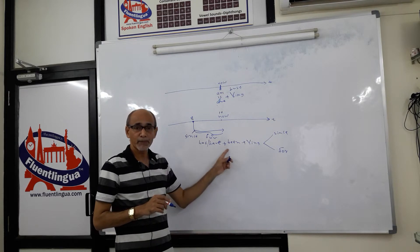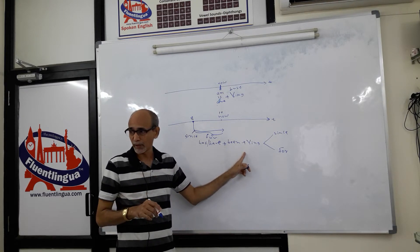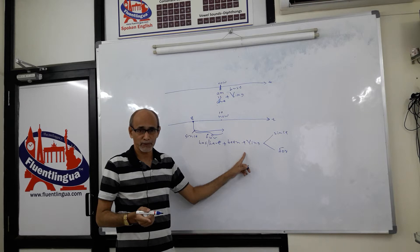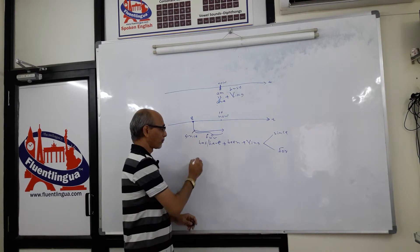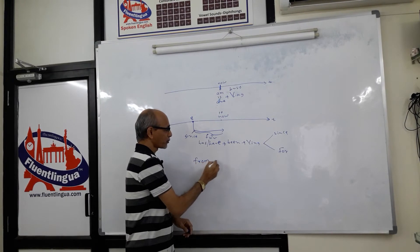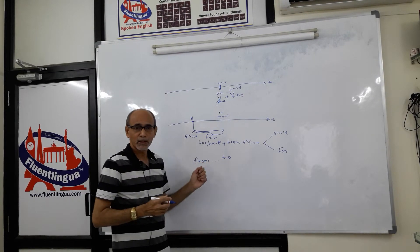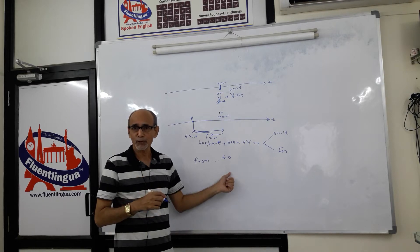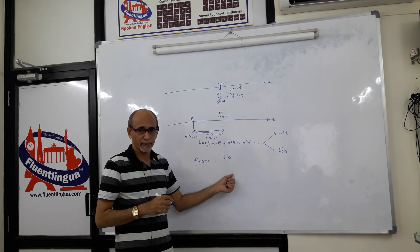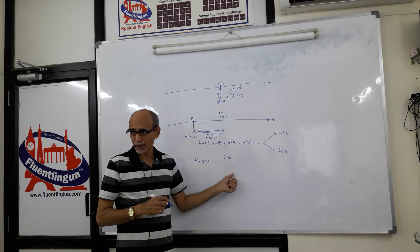So you can say I have been working in this company for five years. In this situation, we don't use from. From is used only when you want to talk about the beginning point and the end point. For example, yesterday I was busy from 10 to 5. Is that clear?